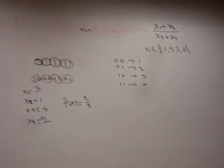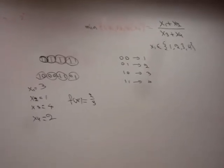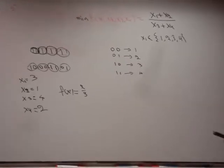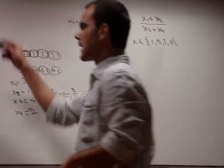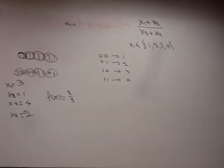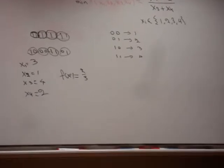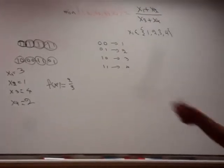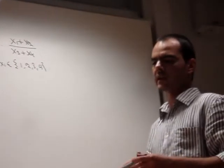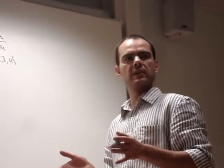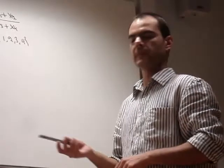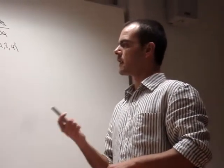We also need a fitness function. We use a fitness function to link the genetic algorithm to the initial solution problem we have. The fitness function is a transformation of the objective function, but it has two properties. First of all, it's always positive. And second, the higher its value, the better the solution.